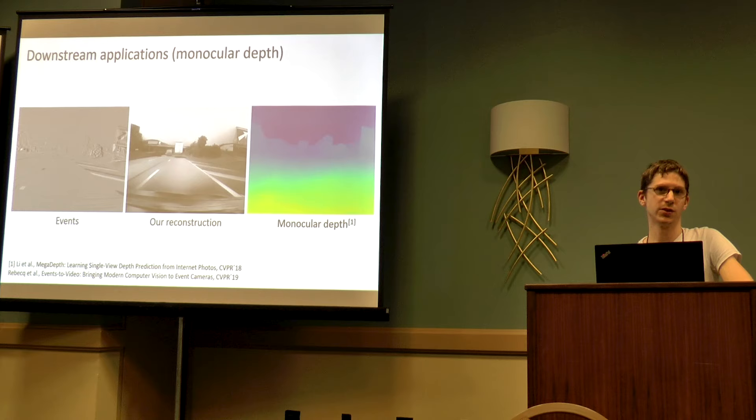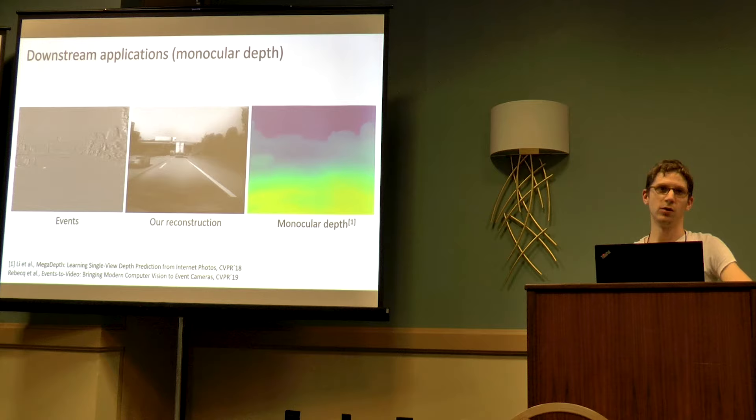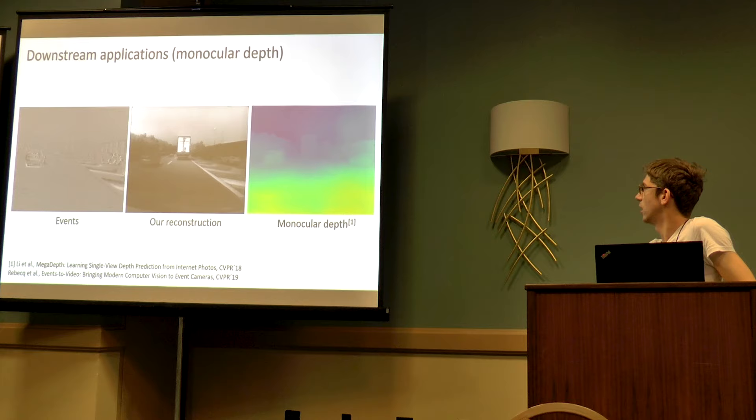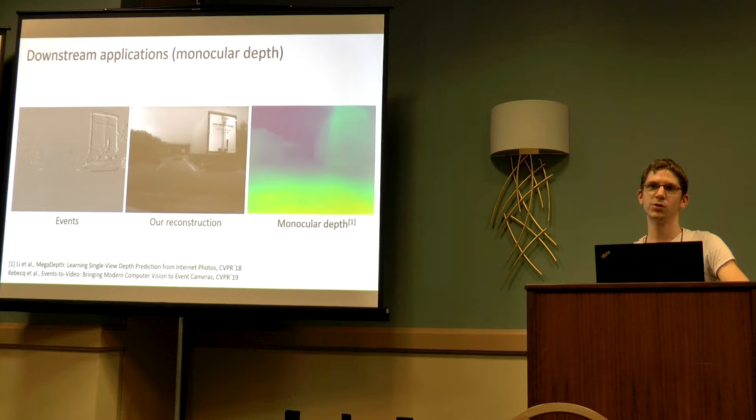This is a monocular depth example. In the middle is our reconstruction, and on the right side the output of a state-of-the-art monocular depth algorithm. From events only, we can get a highly accurate monocular depth map without needing to explicitly train on event data. We think there is a lot of value in transfer learning here.